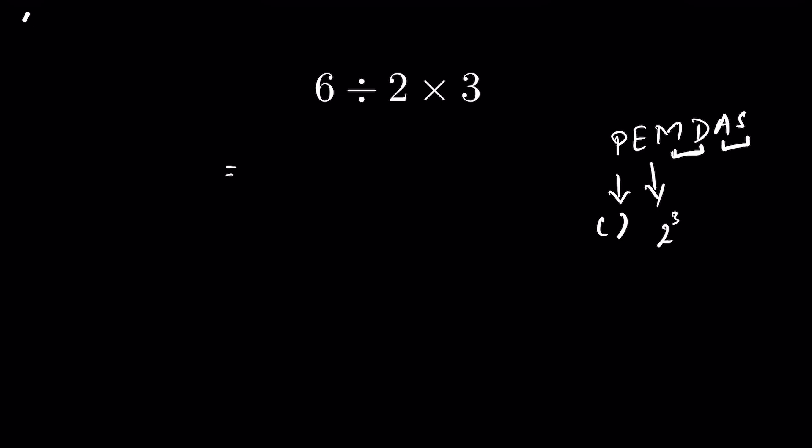Why did I group them together? I grouped them together because multiplication and division do not have any precedence over each other. Whichever comes first from left to right, we solve that first. If you're following the BODMAS rule, you can see that division is written first and then multiplication.